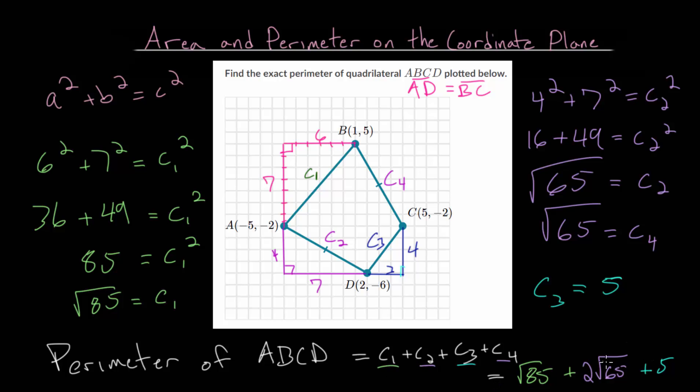So this would actually be our final answer. If we want, we could find a decimal approximation. But this is the best way or the only way to write this as an exact answer. Since if we actually plug any of these square roots into the calculator,